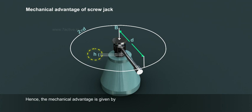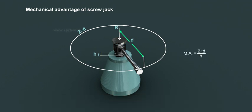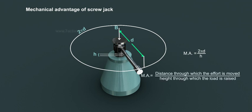Hence, the mechanical advantage is given by MA = 2πD/H. MA equals distance through which the effort is moved divided by height through which the load is raised.